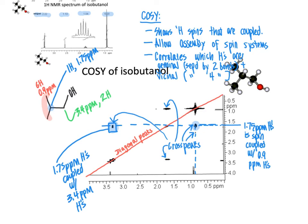There is one signal in the proton NMR spectrum at about 2.6 ppm integrating to one proton that we haven't mentioned within our COSY spectrum — that signal corresponds to the hydroxy proton. Generally, protons that are directly bonded to nitrogens or oxygens appear in proton spectra as singlets, and if they show up in a COSY spectrum, their correlation signals are very weak. When we look at the signal at 2.6 ppm and look for cross peaks, we see there are none, which is typical for such protons.